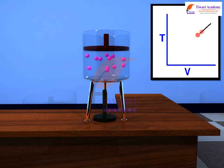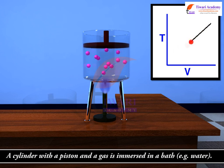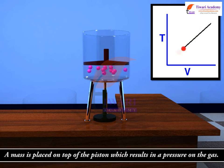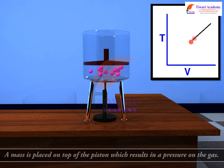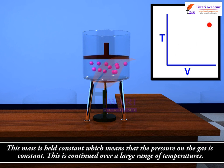The experiment is simple. A cylinder with a piston and a gas is immersed in a bath, e.g. water. A mass is placed on top of the piston which results in a pressure on the gas. This mass is held constant, which means that the pressure on the gas is constant.